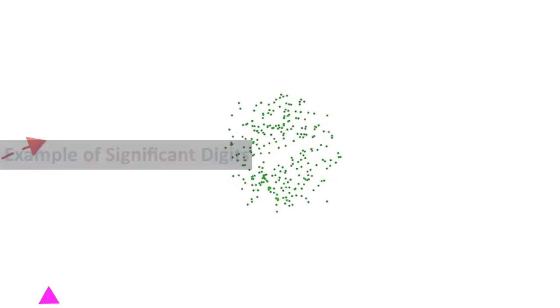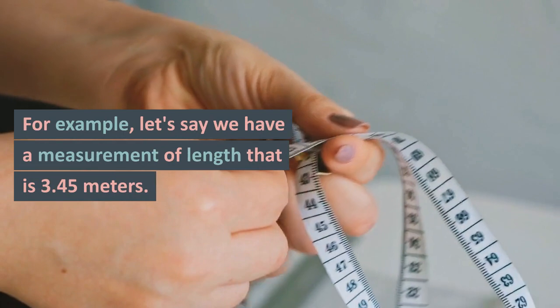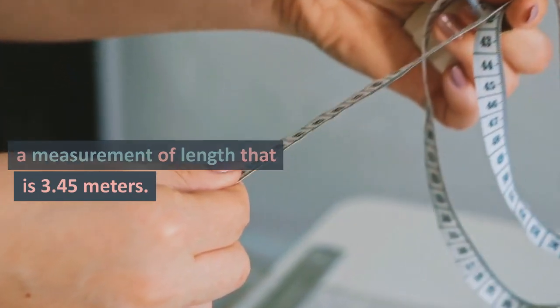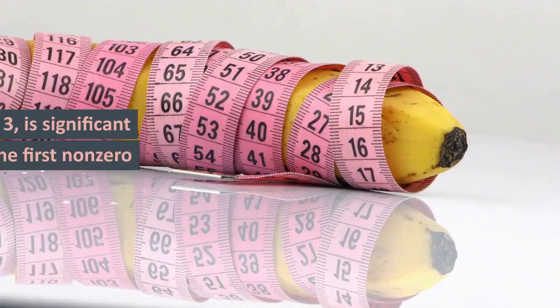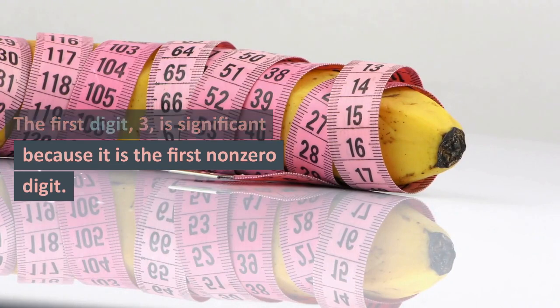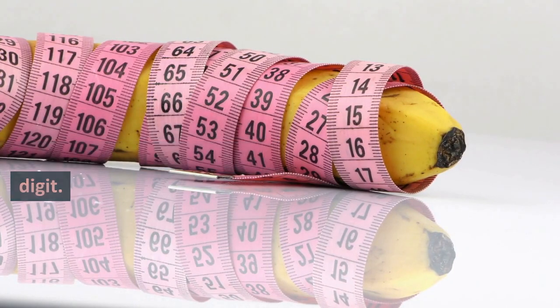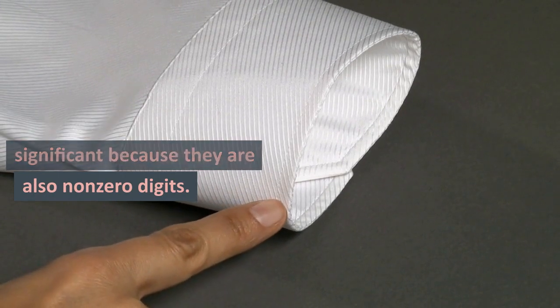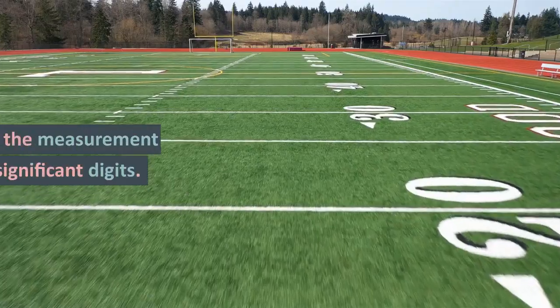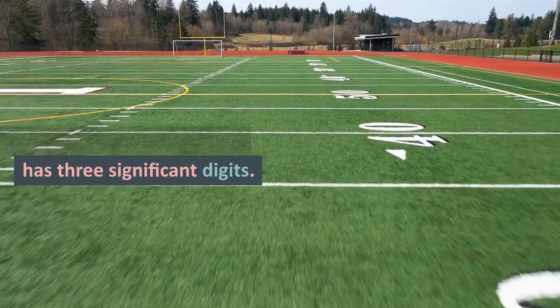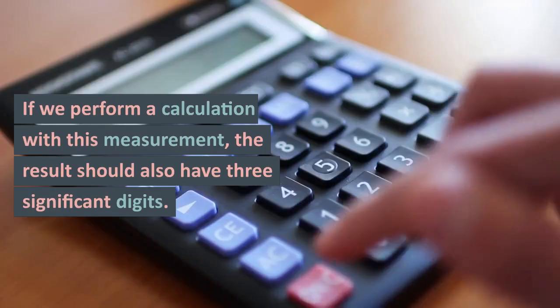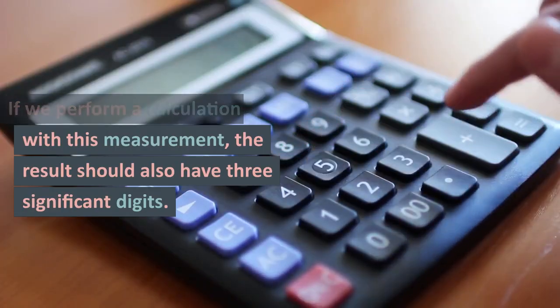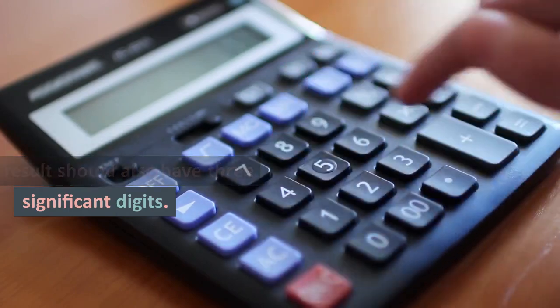Example of significant digits. For example, let's say we have a measurement of length that is 3.45 meters. The first digit, 3, is significant because it is the first non-zero digit. The digits 4 and 5 are significant because they are also non-zero digits. Therefore, the measurement has three significant digits. If we perform a calculation with this measurement, the result should also have three significant digits.